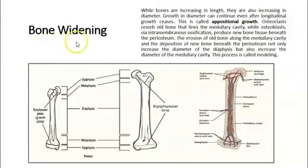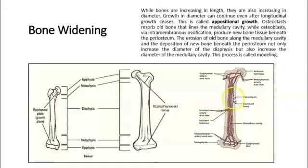Bone widening and thickening occurs through appositional growth — calcium is deposited by osteoblasts on the outer borders of the bone. At the same time, osteoclasts remove calcium from the inner area. More and more bone is deposited on the outer layers, causing the bone to get wider and thicker.